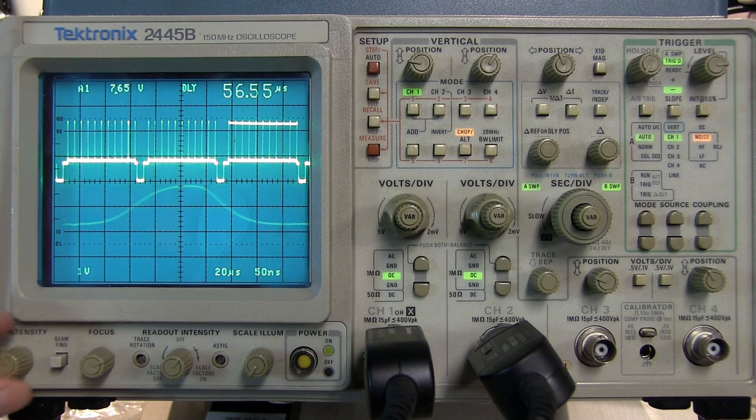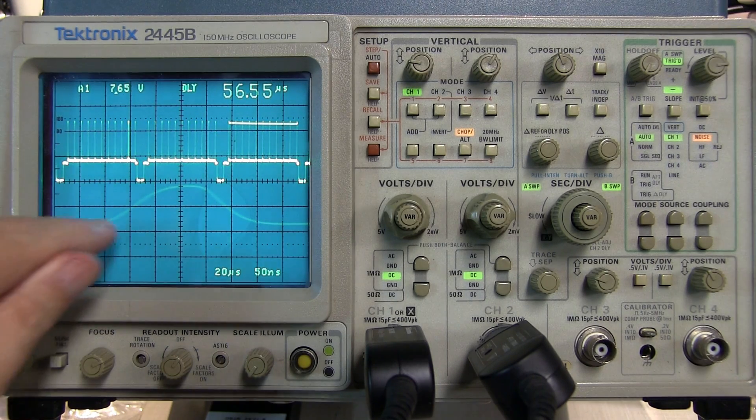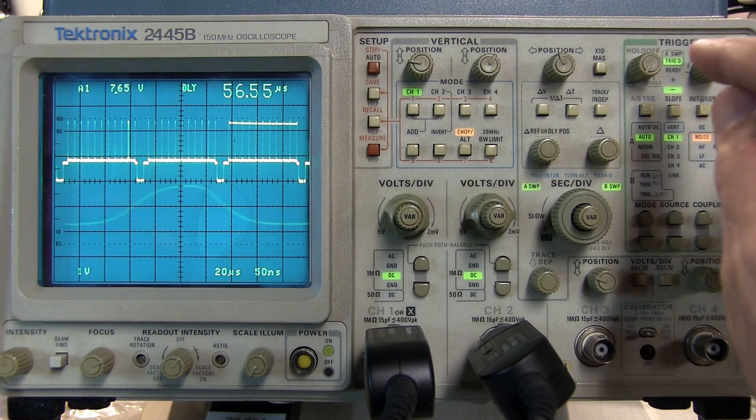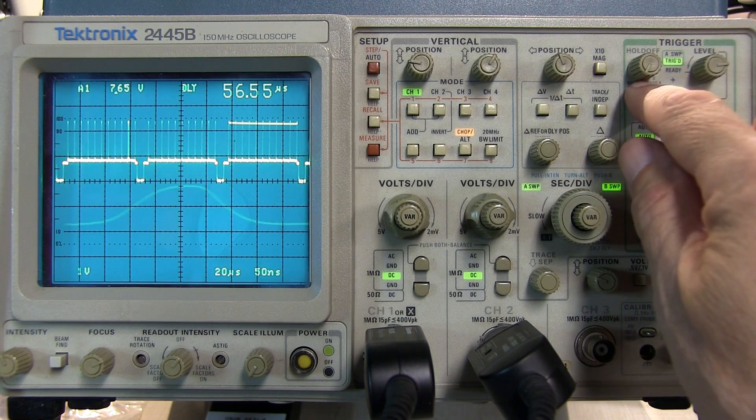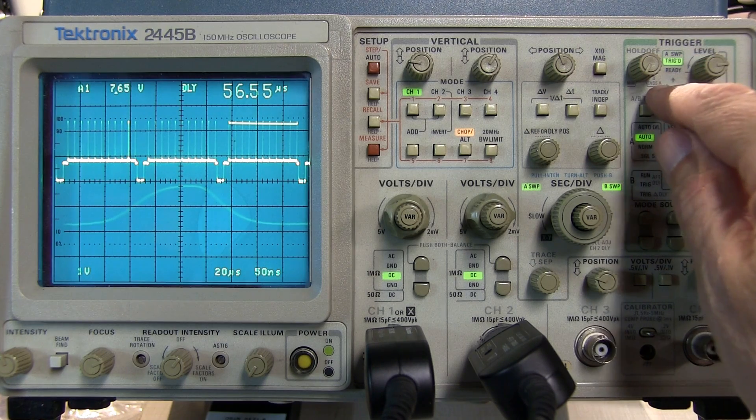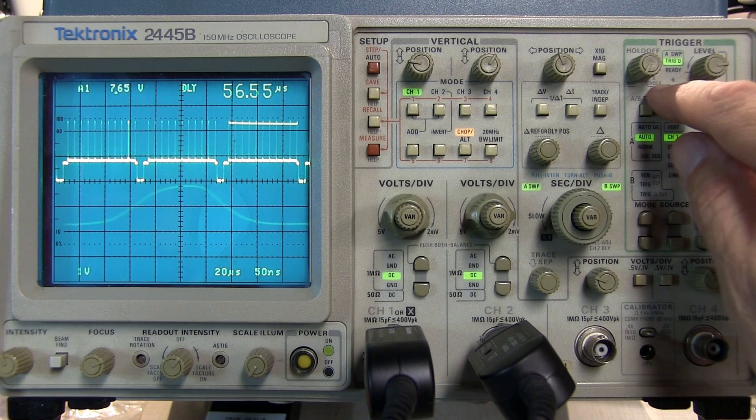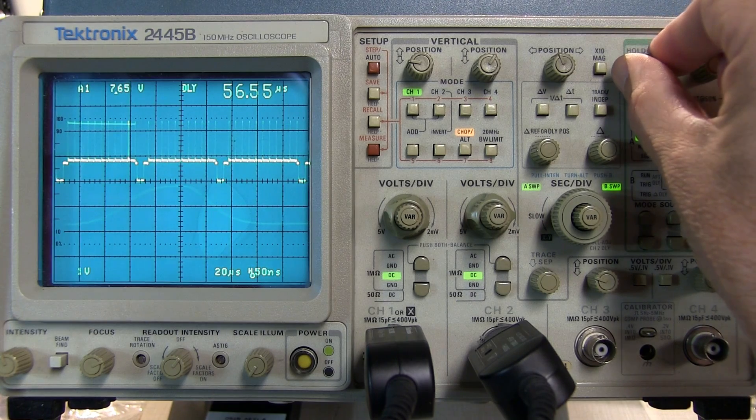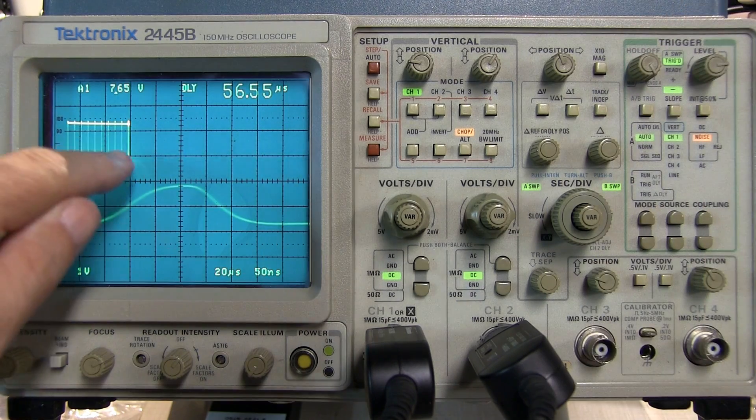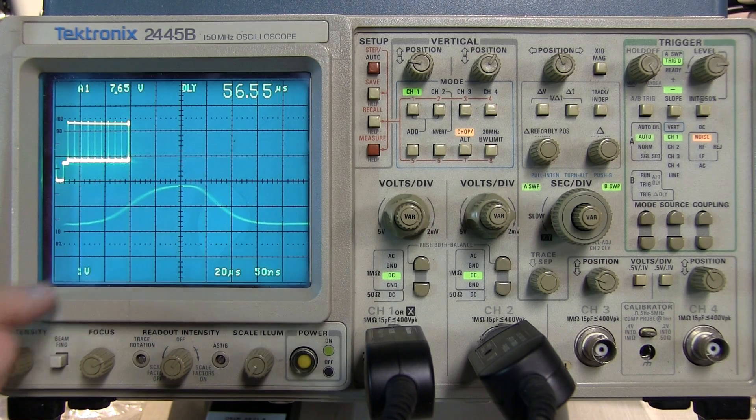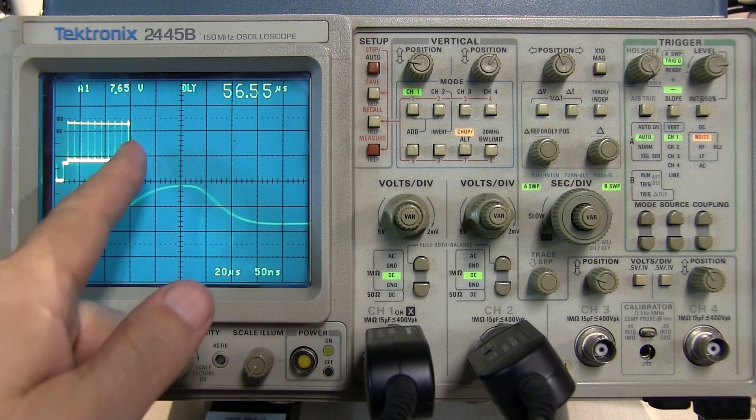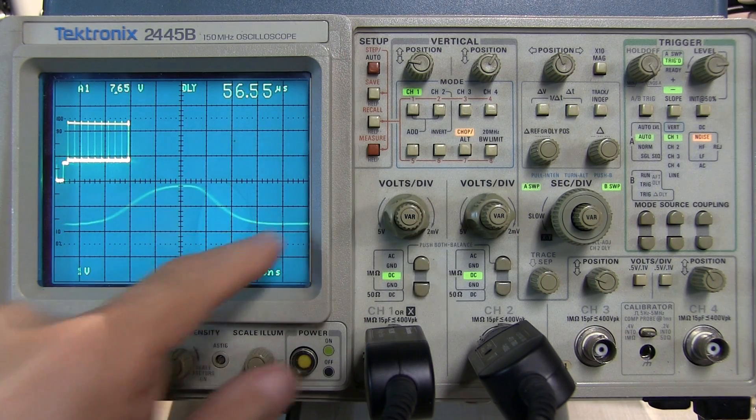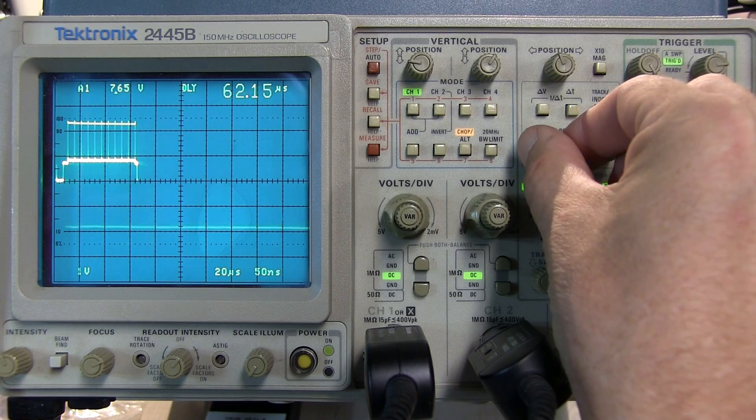So there's one more trick that the designers thought of here. On the hold off knob if you rotate it all the way fully clockwise there's an indicator down here that says B ends A and what that does is it will cause the A sweep to stop right after the B is finished sweeping. That tends to minimize the amount of time that A is occupying the trace and tends to make the B sweep show up just a little bit brighter.